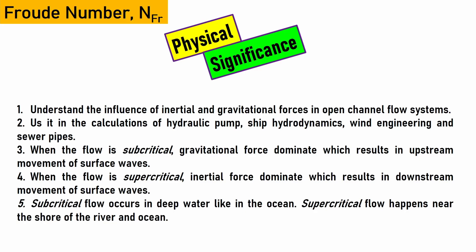Subcritical flow is generally seen in deep water oceans, because from the formula Fr = v / √(lg), greater depth l means a smaller Froude number and more subcritical behavior. On the other hand, near the shore of an ocean or a river, where the water is shallow, you will see heavy, rapid waves showing supercritical flow behavior.